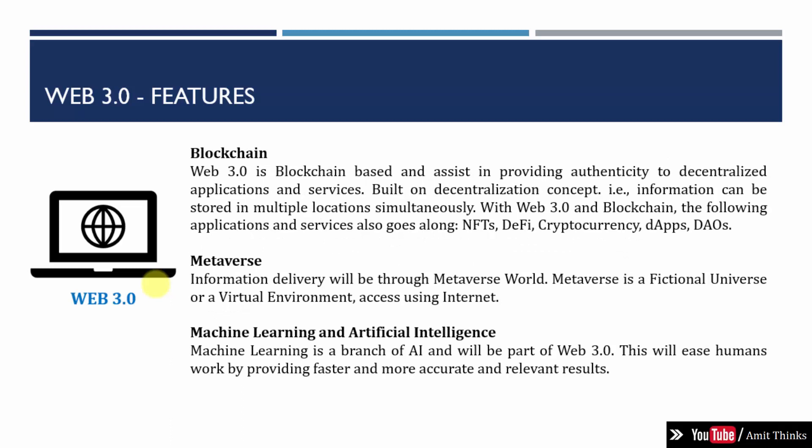Blockchain is another key feature. Web 3.0 is completely blockchain-based and provides authenticity through decentralization — no central authority. Through decentralization, you can store information in multiple locations simultaneously. Web 3.0 and blockchain also include non-fungible tokens, or NFTs. An NFT is basically a financial security consisting of digital data stored in a blockchain in the form of a distributed ledger.